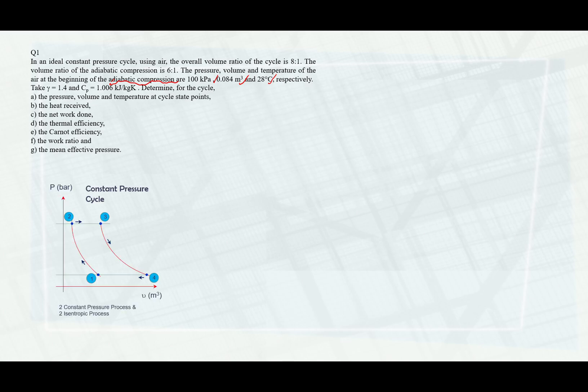The pressure, volume, and temperature of the air at the beginning of adiabatic compression are given. When you refer to the PV diagram, you can see points 0.1 to 2 here. As you refer to this path, it is actually referring to an isentropic compression process. So at the beginning, that means point 0.1.